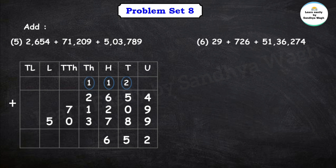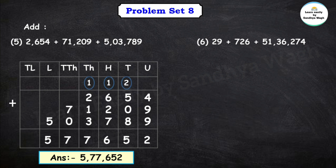Hundreds place: 6 plus 2 plus 7 plus the carried 1 is 16. Write 6 in hundreds place, carry 1 to thousands. Thousands place: 2 plus 1 is 3, plus 3 is 6, plus 1 is 7, plus 0 is 7. And 5 — there is no digit in that position for the other numbers, so 5 as it is. Final answer is 5 lakh 77,652.